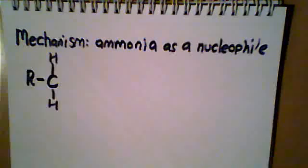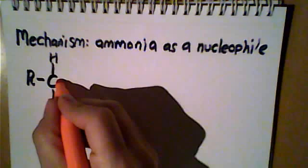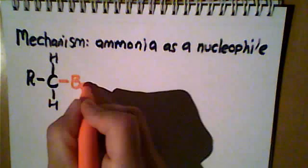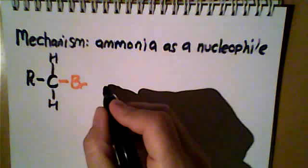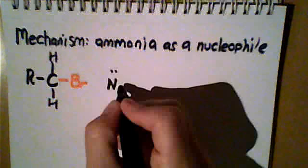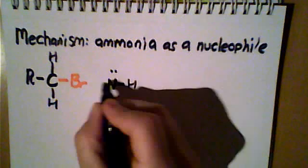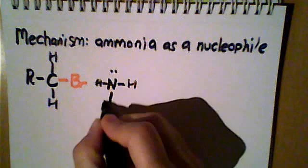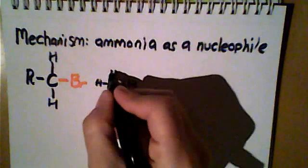In the last video we looked at the mechanism of the reaction between hydroxide ions as a nucleophile. Now we're going to look at the same molecule — a bromoalkane again, with R representing the rest of the molecule and the bromine attached directly to the carbon. This is a primary haloalkane. The only difference in this case is the nucleophile is a neutral molecule rather than a negatively charged anion; however it's still a nucleophile because it possesses a lone pair of electrons.